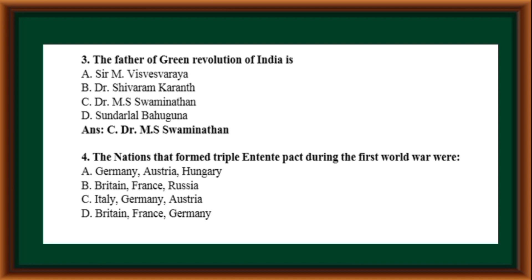The nations that formed the Triple Entente Pact during the First World War were: Germany-Austria-Hungary, Britain-France-Russia, Italy-Germany-Austria, Britain-Austria-France-Germany. Correct answer is option B — Britain, France, Russia.